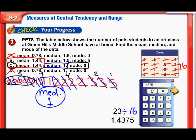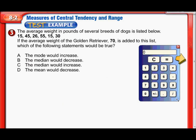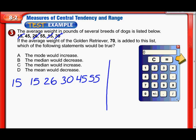Let's keep moving. The average weight in pounds of several breeds of dogs is listed. If the average weight of the golden retriever, 70, is added to the list, which of the statements would be true? So right now we have six numbers, and we're supposed to add a seventh number. I think I'm going to put these in order first. So I have two 15s, then a 26, then a 30, a 45, and a 55. And now they want me to add on the 70.